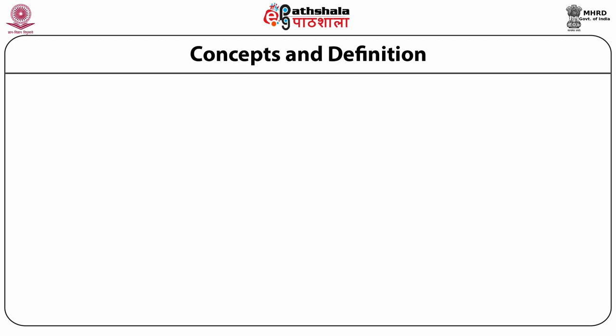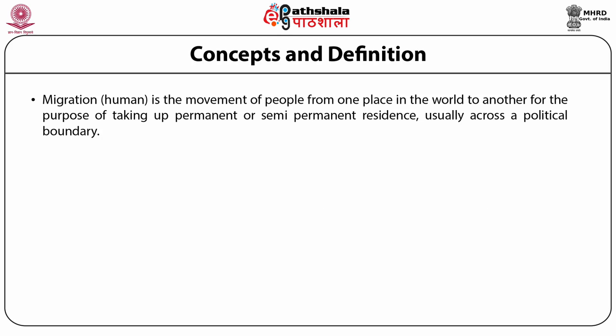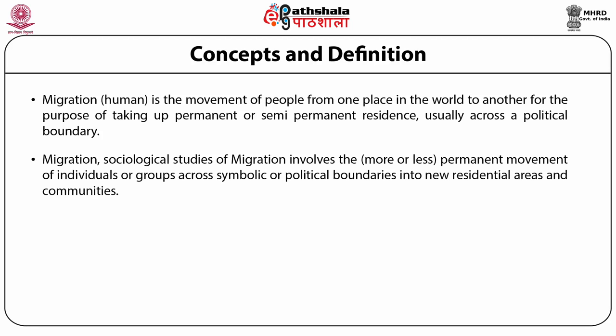Concepts and Definition — Migration: Human migration is a movement of people from one place in the world to another for the purpose of taking permanent or semi-permanent residence, usually across a political boundary. An example of semi-permanent residence would be the seasonal movements of migrant farm laborers. Sociological studies of migration involve the more or less permanent movement of individuals or groups across symbolic or territorial boundaries into new residential areas and communities.